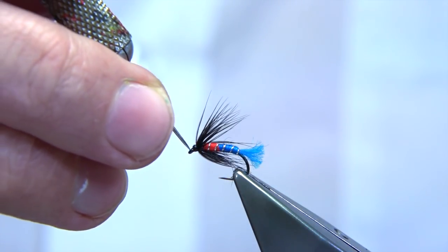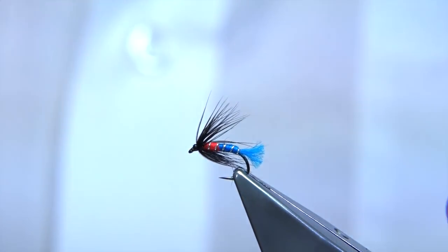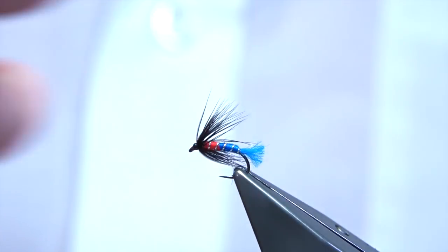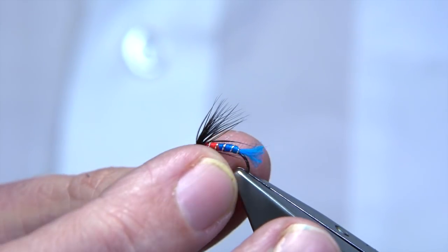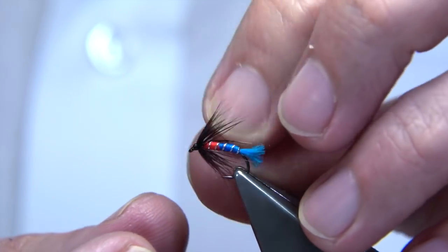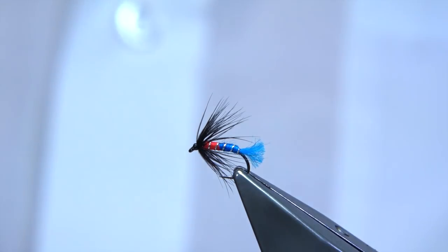And there we are. That's the small Camasunri killer. As you see, you can tie it in bigger sizes. But for brown trout, certainly this side would be a good one to use. So, I hope you enjoyed that.